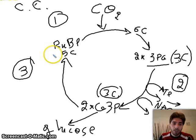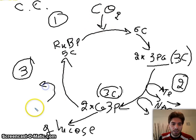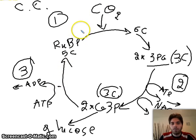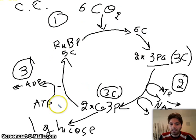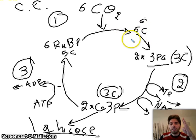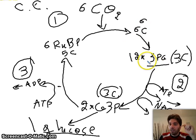The rest of the G3P molecules go back to regenerate RuBP in the third step, called RuBP regeneration. We need to regenerate RuBP because if we run out of it, there's nothing to fix CO2 anymore. This step also uses ATP; the energy is transferred and ADP is produced, which goes back to the light reaction to be recharged. Now for the numbers: we need six CO2 to make one glucose, so the cycle must run six times. Six CO2 bind to six molecules of RuBP, creating six six-carbon molecules. Each of those breaks down into two 3-PG, giving twelve 3-PG total.